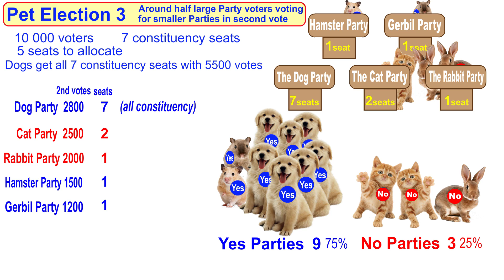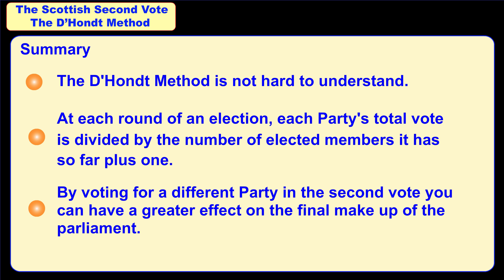This was just a short video to show how the D'Hondt method works. As a summary: the D'Hondt method is not hard to understand. At each round of an election, each party's total vote is divided by the number of elected members it has so far plus 1. By voting for a different party in the second vote, you can have a greater effect on the final makeup of the parliament. I hope you enjoyed the video with the animal characters and now understand a little bit more about how the D'Hondt method works.